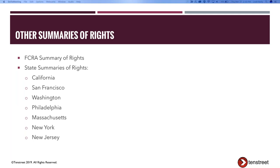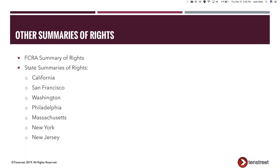You absolutely want to always provide applicants with their FCRA Summary of Rights. If you use our system, it's the first thing the applicant will see after they sign their employment application. If you use the IntelliApp, this is automatically presented and we keep it updated. This is a form document that the CFPB puts out and it has to be provided exactly as they issue it. It was updated in September of 2018 and we instantly updated it in our system.